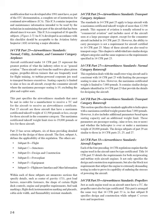14 CFR Part 29 specifies standards applicable to helicopters with a maximum certified weight greater than 7,000 pounds. It also includes additional parameters based upon seating capacity — 9 or less, 10 or more — and whether the helicopter is over or under a maximum weight of 20,000 pounds. The design subparts of Part 29 are similar to those in 14 CFR Parts 23, 25, and 27. 14 CFR Part 33, Airworthiness Standards: Aircraft Engines. Each of the four preceding regulations requires the engine used in the aircraft to be type certificated. Part 33 details requirements for both reciprocating and turbine-style aircraft engines, specifying design, construction, and block test requirements. 14 CFR Part 35, Airworthiness Standards: Propellers. The propeller must also be type certificated, with Subpart B specifying design and construction and Subpart C covering tests and inspections.